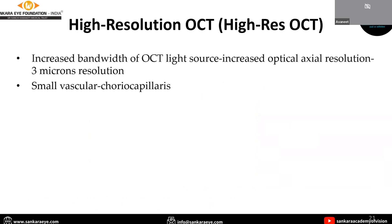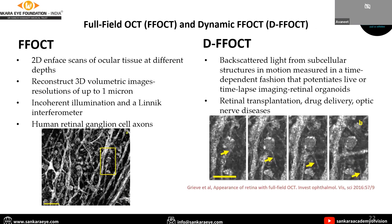The resolution of OCT can be increased by increasing the bandwidth of the OCT light source. Full field OCT forms 2D en face scans of ocular tissue at different depths and can reconstruct 3D volumetric images at resolutions up to one micron, which is especially helpful for visualizing human retinal ganglion cell axons. Dynamic OCT is a derivative of full field OCT where backscattered light from subcellular structures can be seen in motion, showing movement of axons over time.